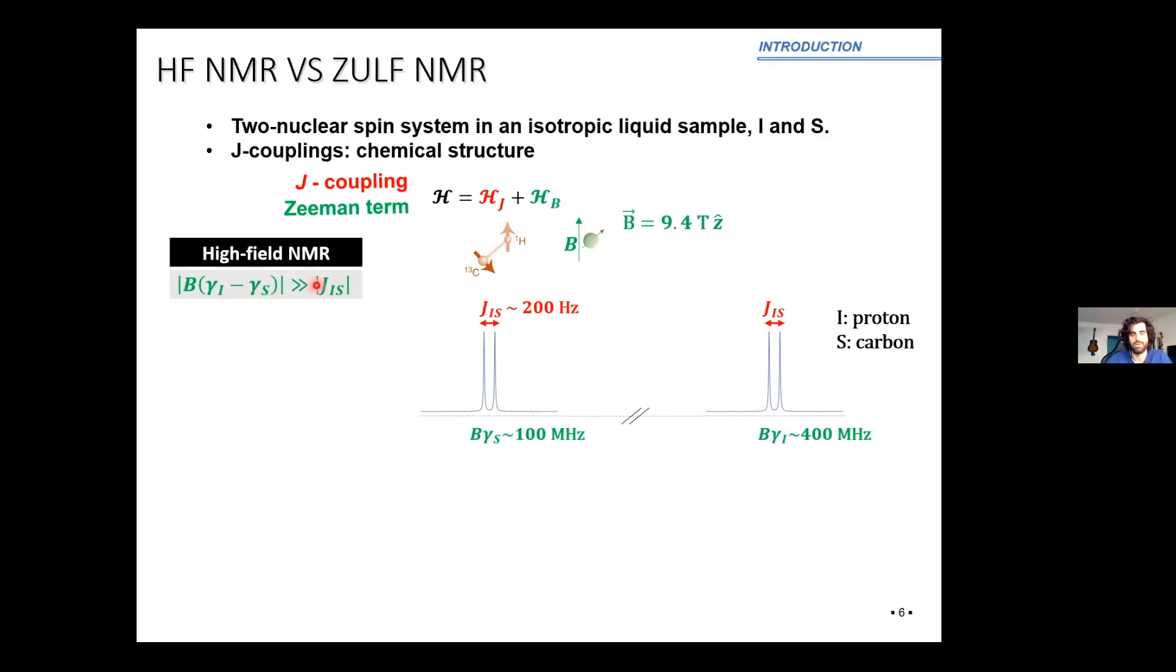The situation we have in high field is that the NMR frequency of the individual spins, or the difference of NMR frequencies, are much greater than the J coupling. The high field spectrum, for example, if we take a proton and carbon at this field, we will get the NMR frequency of carbon at 100 megahertz. And many megahertz later, we can find the NMR frequency of proton at 400 megahertz. We can see a splitting that is due to the J coupling interaction in the orders of hertz, typically, which does not depend on the magnetic field. This is the reason why it's useful at zero field.